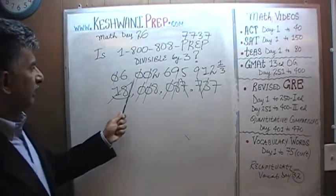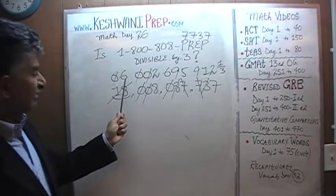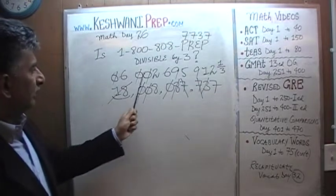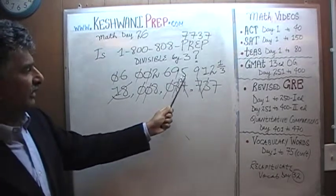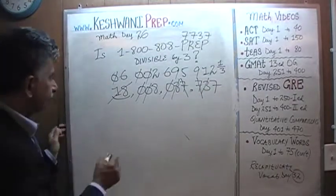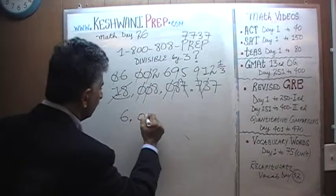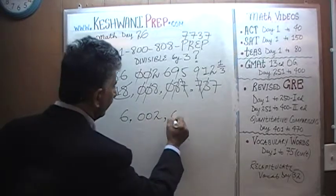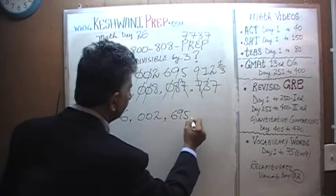So the final answer is 6 million, 6 billion rather. 6 billion 2 million, 695 thousand, 912 and 1 third. 6 billion, 2 million, 695 thousand, 912 and 1 third.